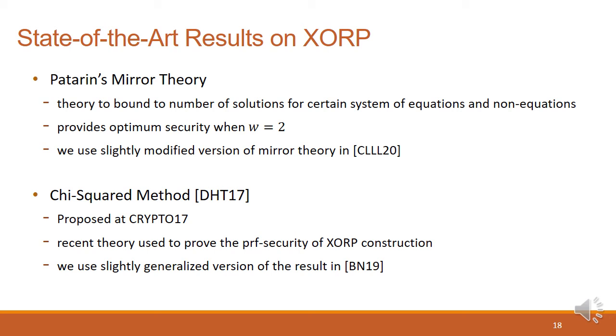Although there have been many studies on XORP, there are two of the most outstanding results. One is Patarin's mirror theory. Mirror theory is a theory to bound the number of solutions for certain system of equations and non-equations. It provides optimum security when W is equal to 2, and in this research, we will use slightly modified version of the mirror theory, in the paper from Chen et al. Another is done with Chi-Squared method, which is proposed by Dai et al. at Crypto 2017. Chi-Squared method is the recent theory used to prove the PRF security of XORP-like construction. And in this paper, we use generalized version of Bhattacharya and Nandi's results.